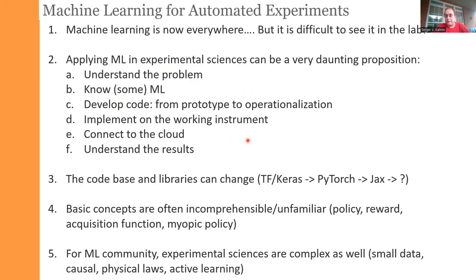Code bases and libraries change — five years ago everything was done in TensorFlow and Keras, and starting from three years ago PyTorch became the instrument of choice. Maybe in a few years it'll be Jax or Julia. The code implementation changes, but the domain understanding will remain invariant. The idea is to understand how to use ML tools as part of the experiment at some level of abstraction above a single platform.